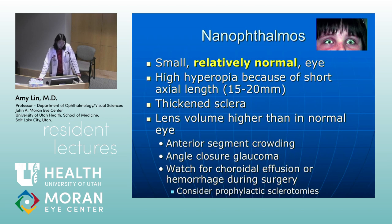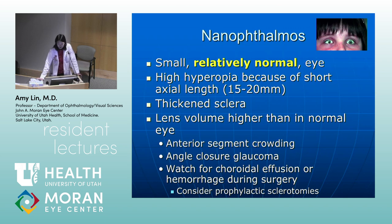Next, nanophthalmos. As opposed to microphthalmos, which is a small malformed globe, this is a small, relatively normal eye. There's usually very high hyperopia because of a short axial length — usually about 15 to 20 millimeters, compared to normal axial length of around 23–24 millimeters. There is a very thickened sclera and the lens-to-globe volume ratio is higher than normal, which can result in anterior segment crowding, angle closure, and glaucoma. The thickened sclera can impede venous outflow through the vortex veins during cataract surgery, so you have to watch for choroidal effusions or choroidal hemorrhage, and one can consider prophylactic sclerotomies.